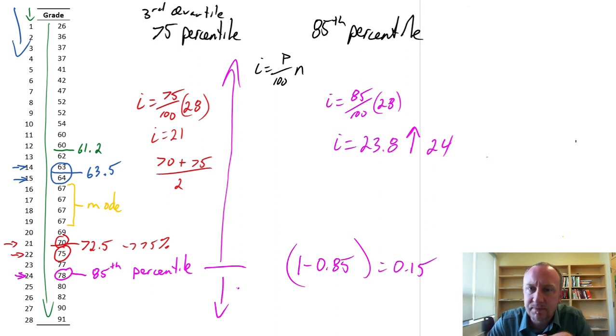Okay, so there's a quick run-through of a few of the different measures of location: mean, median, mode, quartile, and percentile. Hopefully these all are coming to make some sense and starting to become a little bit easier to work with. Okay, thanks again for watching.